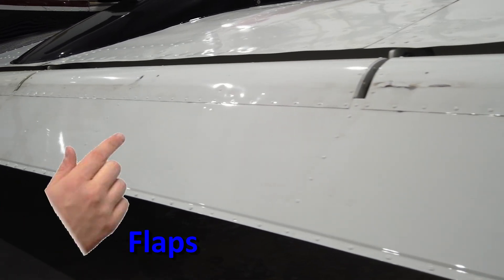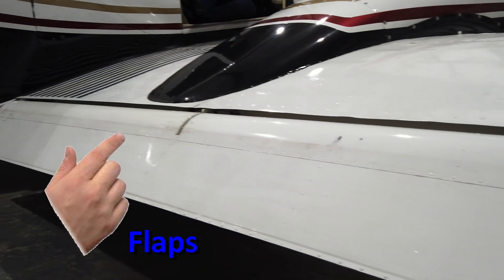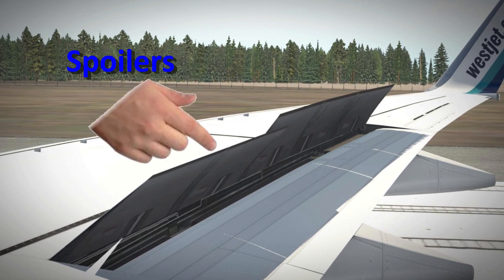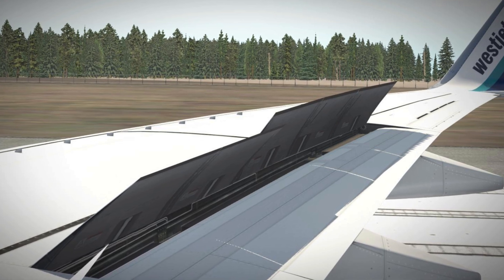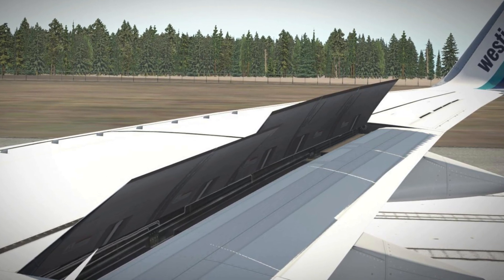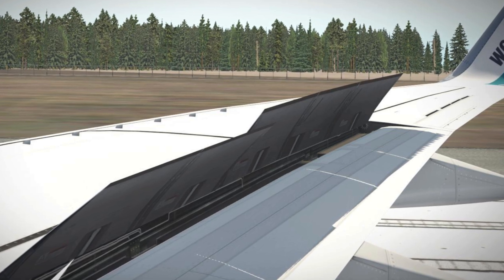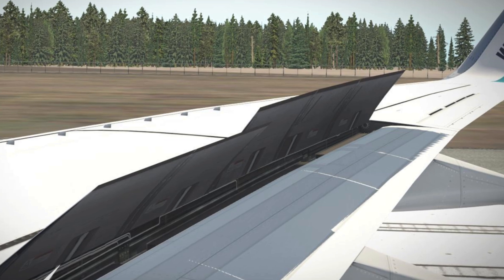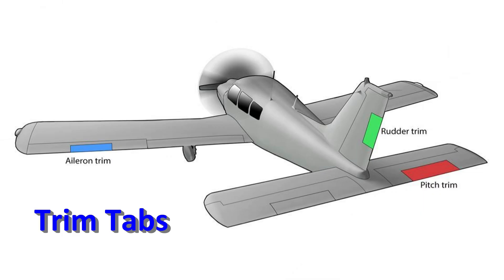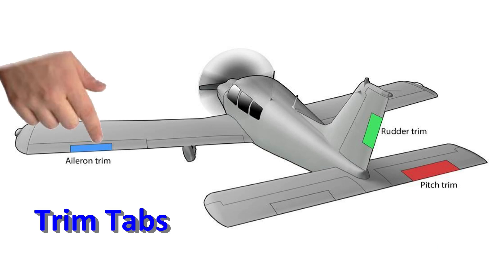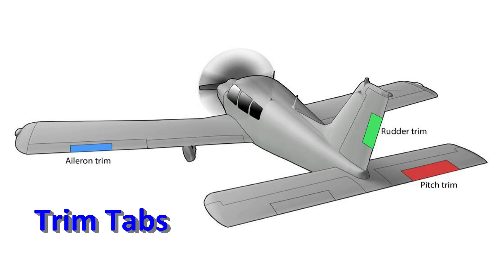Flaps are control surfaces on the trailing edge of the wings that can be extended out to increase lift during takeoff. Spoilers are control surfaces on the top sides of wings that flip upwards. A deployed spoiler does two things: it disrupts or spoils the lift of the wing and increases drag. Spoilers are deployed when you want to rapidly lose altitude and descend quickly. Trim tabs are like miniature surfaces on the edge of the primary control surface, and are used to make small adjustments to the neutral position of either the rudder, elevator, or aileron to achieve better stability — ideally allowing the pilot to not have to make constant adjustments to the controls.